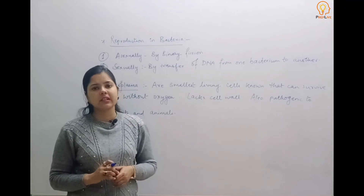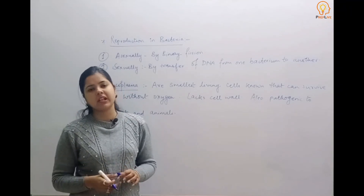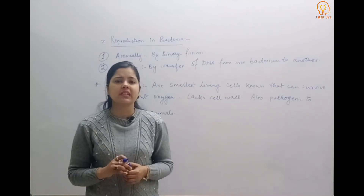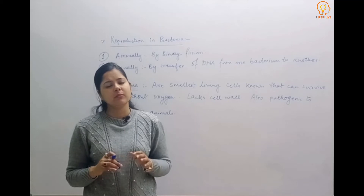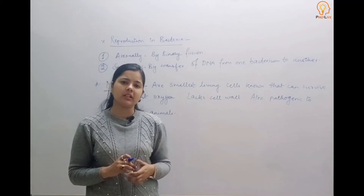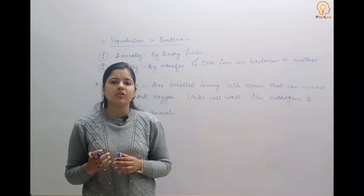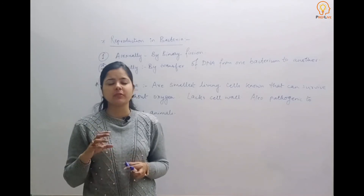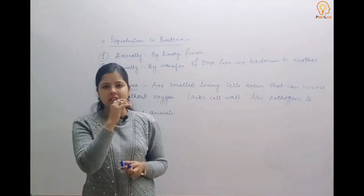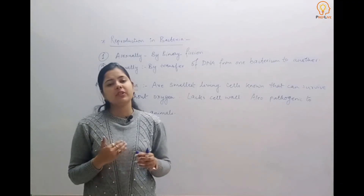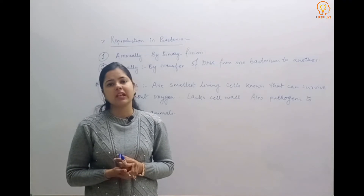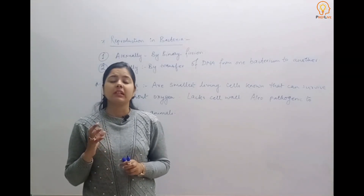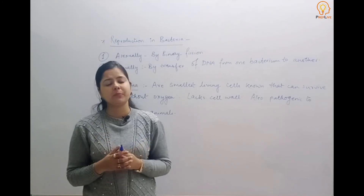The next kingdom is Kingdom Protista. Some features of Kingdom Protista: protists are basically single-celled eukaryotic organisms and are mostly aquatic in nature. Kingdom Protista forms a connecting link between plants, animals, and fungi. Reproduction can be both sexually and asexually by means of cell fusion and zygote formation.